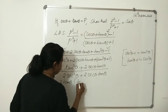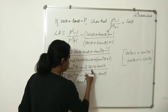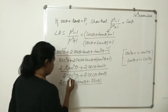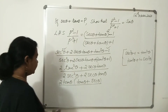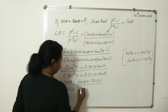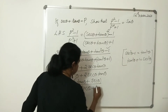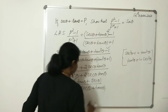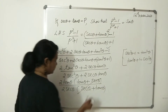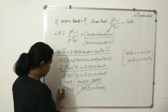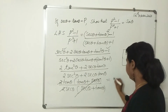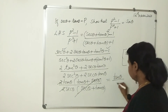We get 2tanθ(tanθ + secθ) in the numerator. In the denominator, taking 2secθ common, we get 2secθ(secθ + tanθ). The common factor (secθ + tanθ) cancels, and the 2 and 2 cancel, leaving tanθ divided by secθ.